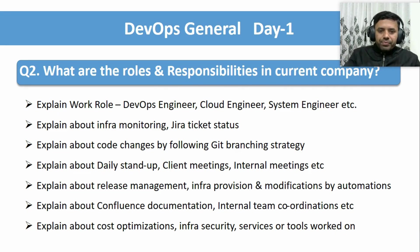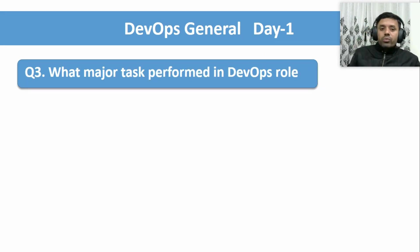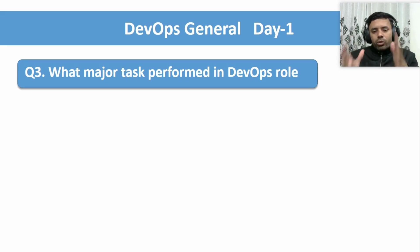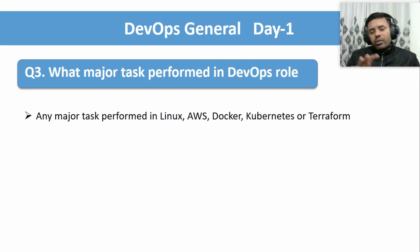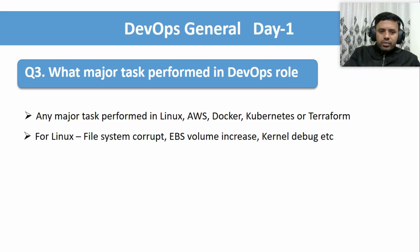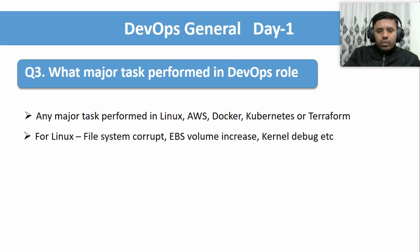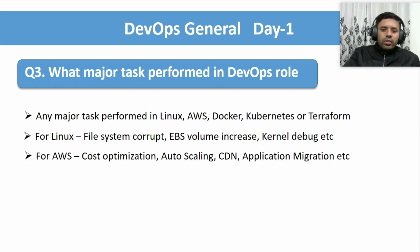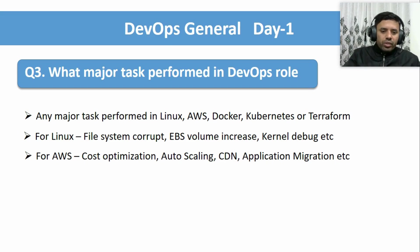The third question is: 'What major tasks have you performed in a DevOps role?' This is also a common question; the pattern may change but the main thought process is what major work you've done in a DevOps role. To answer this, you can take any example with a DevOps tool. For Linux, you can take examples like a corrupt file system, EBS volume increase, kernel-level debugging, or any application performance issue you faced. Prepare for this kind of question so you can give a prompt answer.